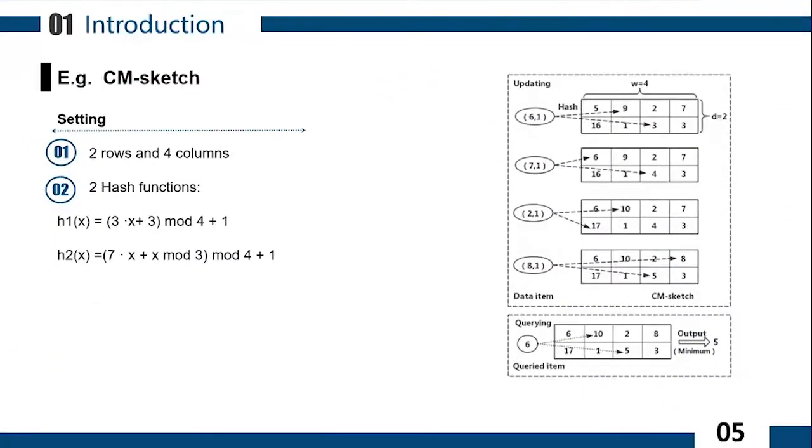Take CM-Sketch for example. Given a CM-Sketch with four columns and two rows, and there are two hash functions. When data item 6 arrives, the corresponding counters are found by two hash functions in the first row of the second column and the second row of the third column. Then, we add 1 in these two counters because data item 6 arrives only once.